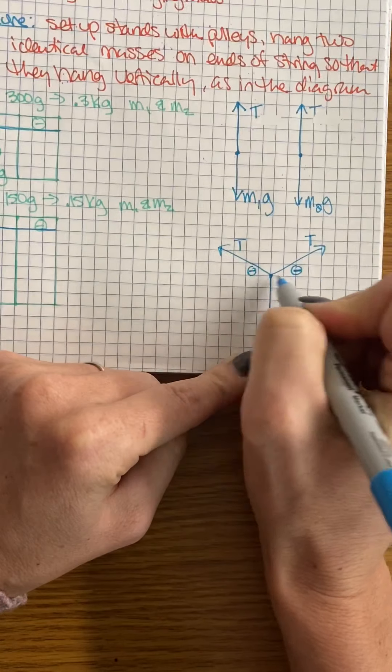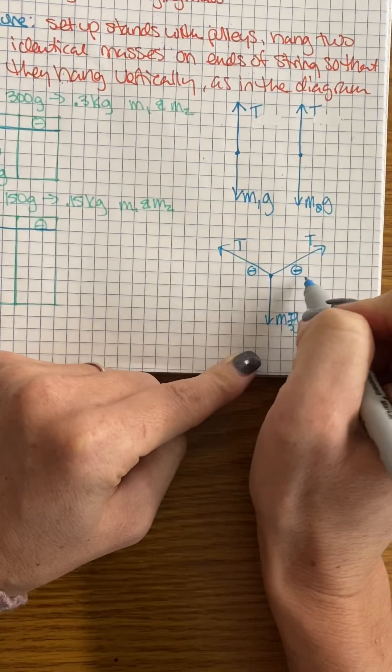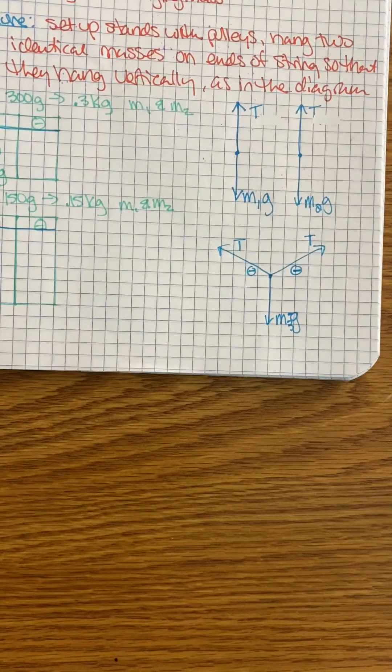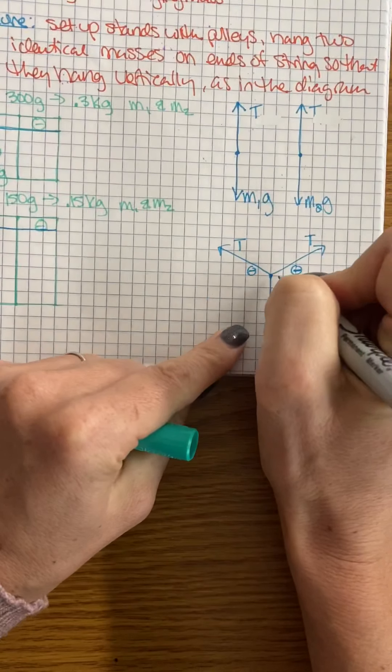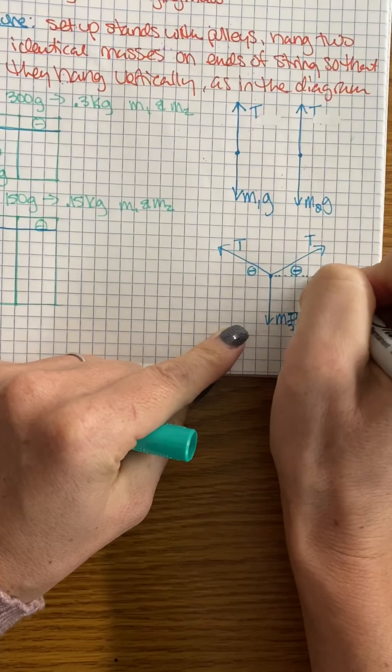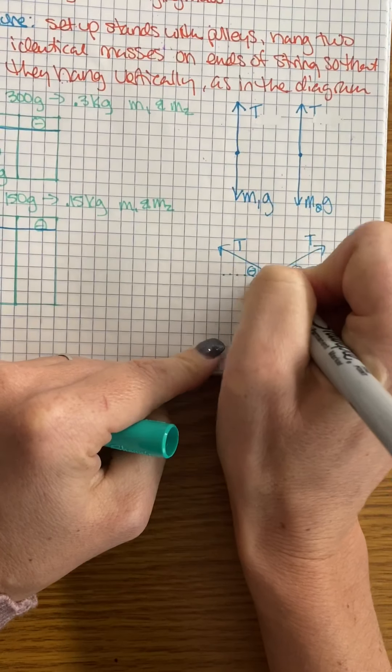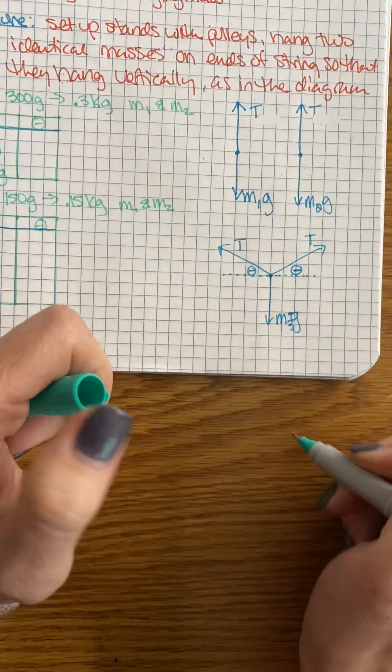When I took the measurements, I measured the theta from here. You know you're not supposed to resolve your vectors on a free body diagram, but just to make this horizontal, this is the angle that we measure.